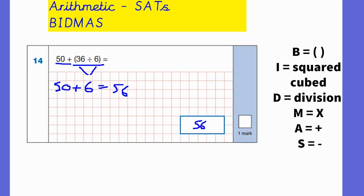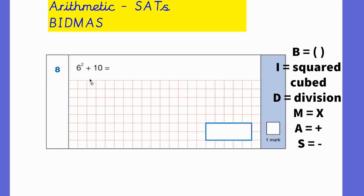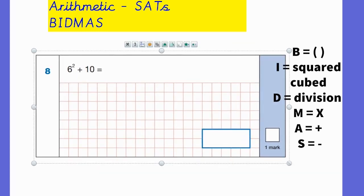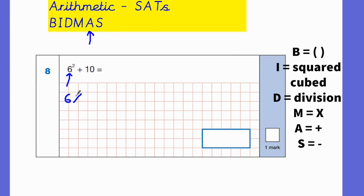The next question is 6 squared plus 10. The reason I wanted to show you this one is because you have got some indices, indices to the power of, so squared or cubed numbers. Addition is the penultimate thing we should be doing. So we're going to do this part first, 6 squared. That's 6 times 6, which equals 36. Then we're going to do the addition part. So we're going to add 10 to the 36, which gives us 46. And 46 would be our final answer.